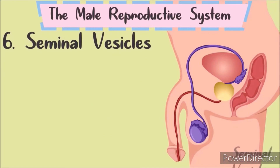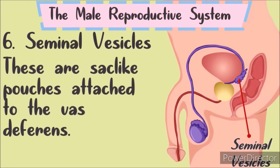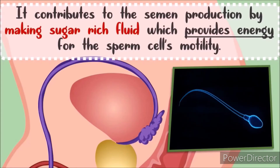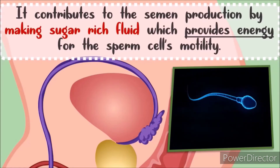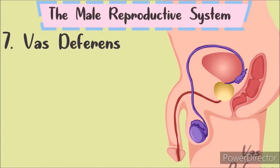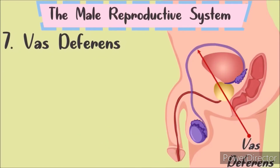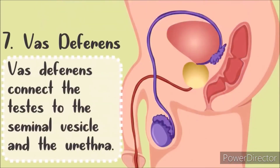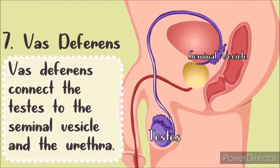Number 6: The Seminal Vesicles. These are sac-like pouches attached to the vas deferens. They contribute to semen production by making a sugar-rich fluid which provides energy for sperm cell motility. Next is the Vas Deferens — a long muscular tube that serves as the passageway for sperm cells released from the testes. It also connects the testes to the seminal vesicles and the urethra.